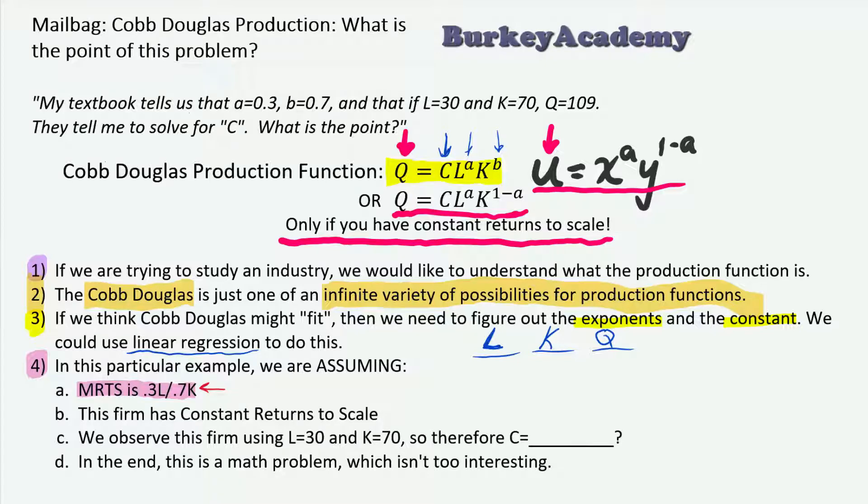Secondly, we're assuming, as I said before, this firm has constant returns to scale, and it all depends on those exponents. If you're assuming that those exponents add to one, so if a and b add to one, that's constant returns to scale. If they add to more than one, that's increasing returns to scale. Less than one, diminishing returns to scale.